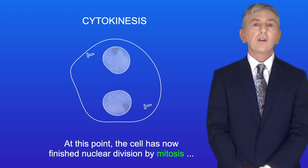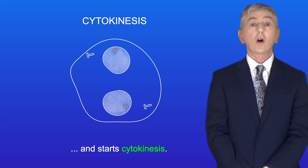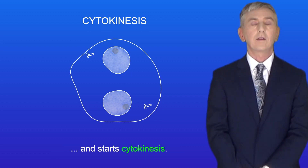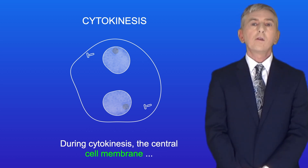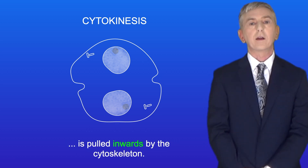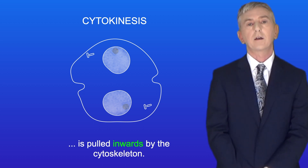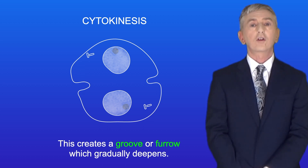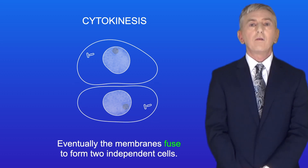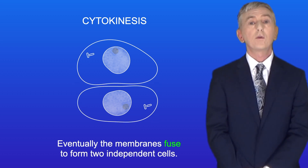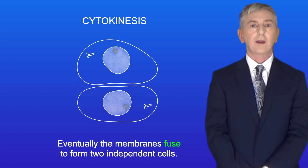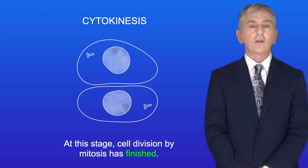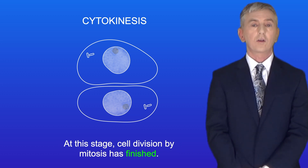At this point the cell has now finished nuclear division by mitosis, and starts cytokinesis. During cytokinesis, the central cell membrane is pulled inwards by the cytoskeleton. This creates a groove or furrow which gradually deepens, and eventually the membranes fuse to form two independent cells. At this stage cell division by mitosis is finished.